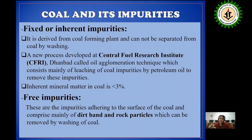Mainly coal has two types of impurities. One is fixed impurity, and another one is free impurity. Fixed impurity is also known as inherent impurity. It is actually derived from coal-forming plants and cannot be separated from coal by washing. So basically it is matter that cannot be separated from coal by washing — that is fixed or inherent impurity.